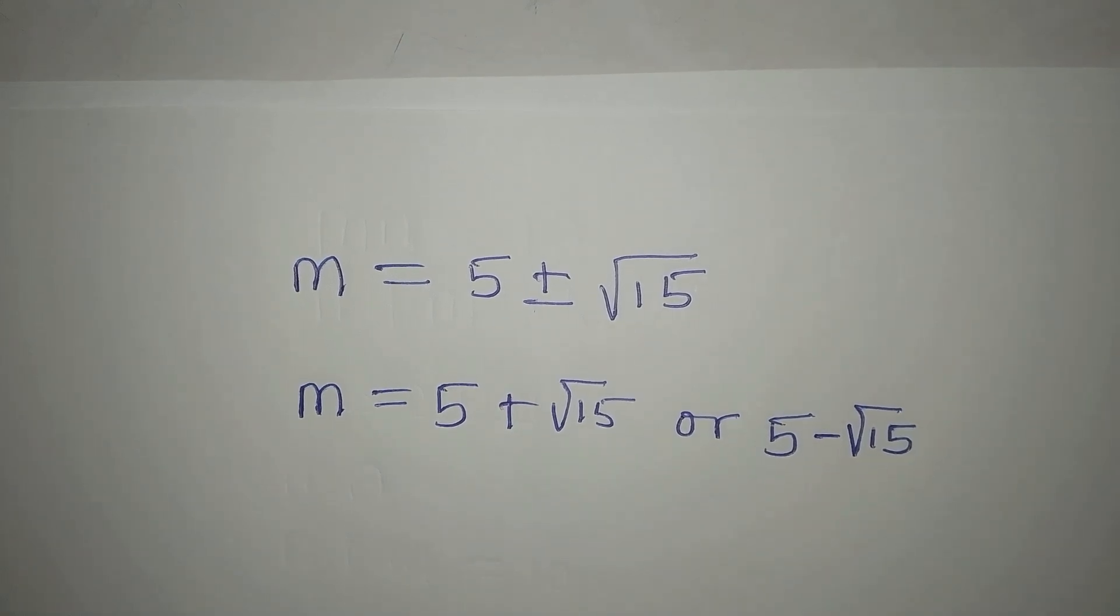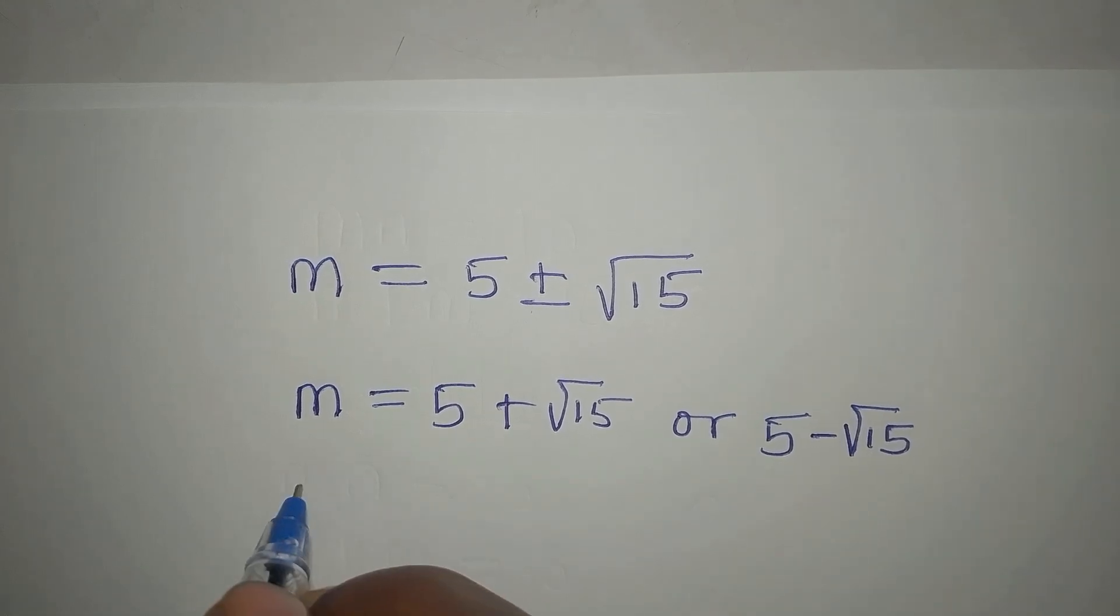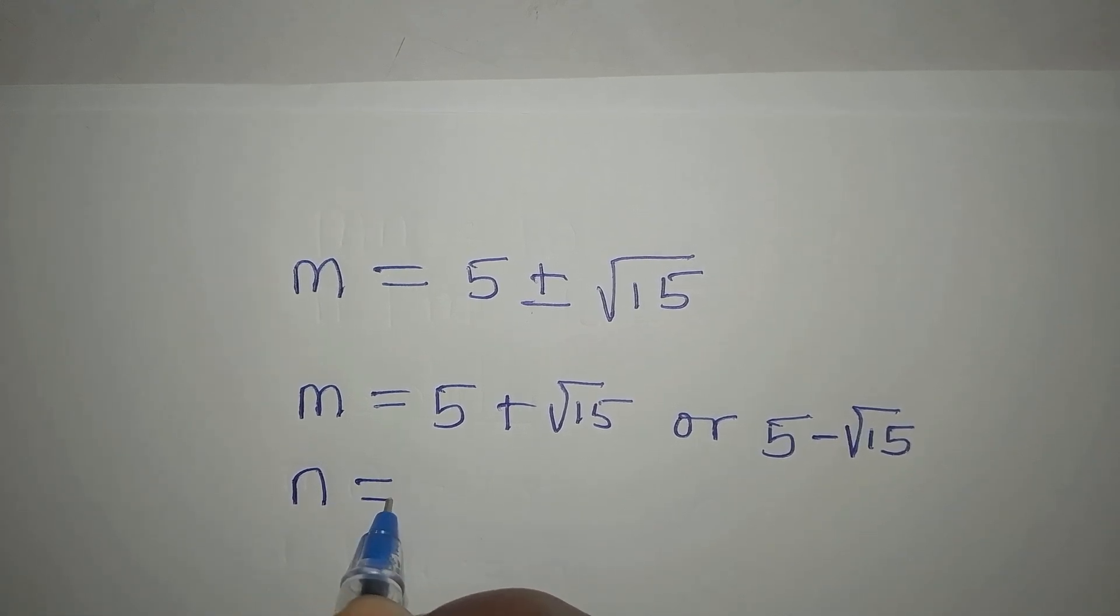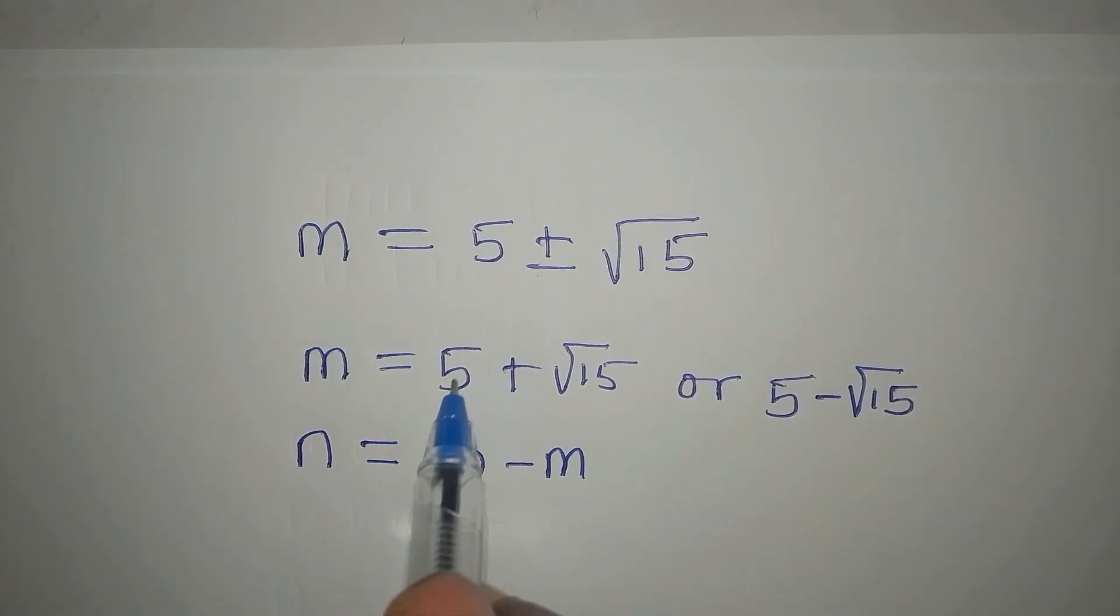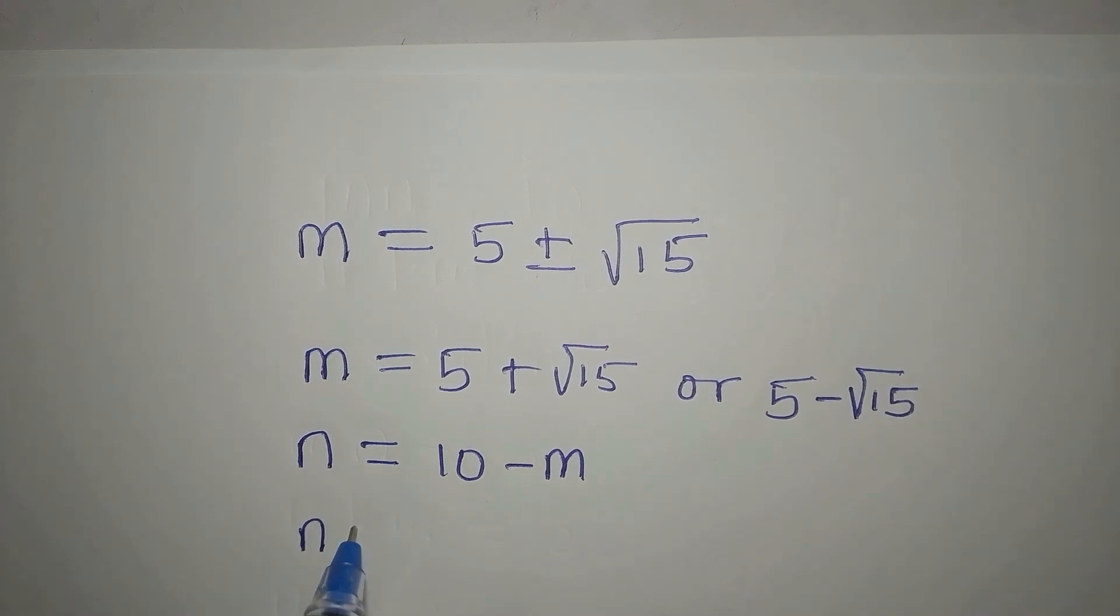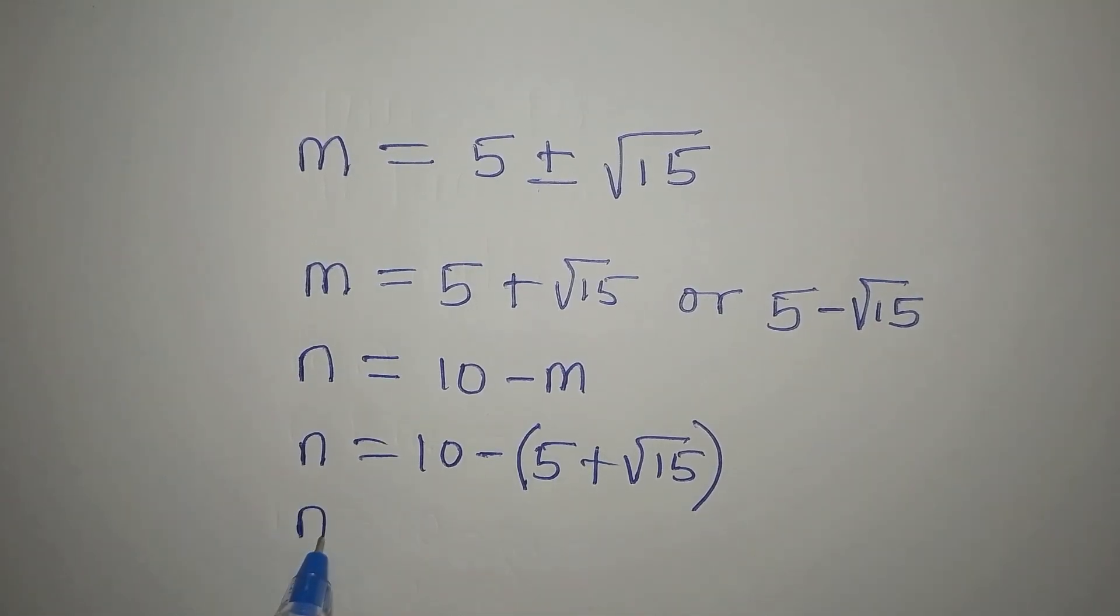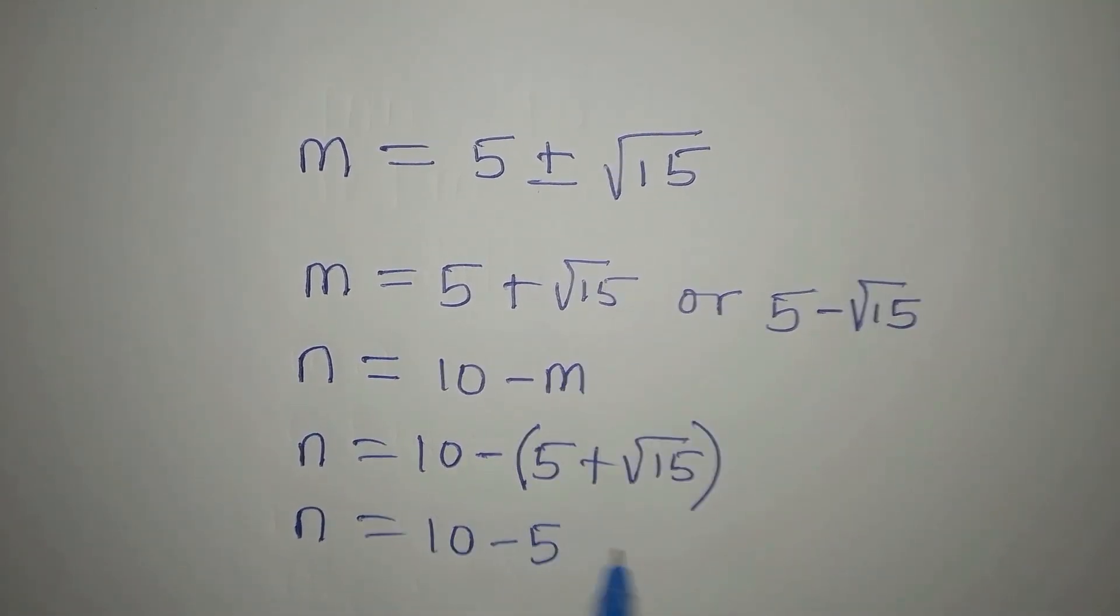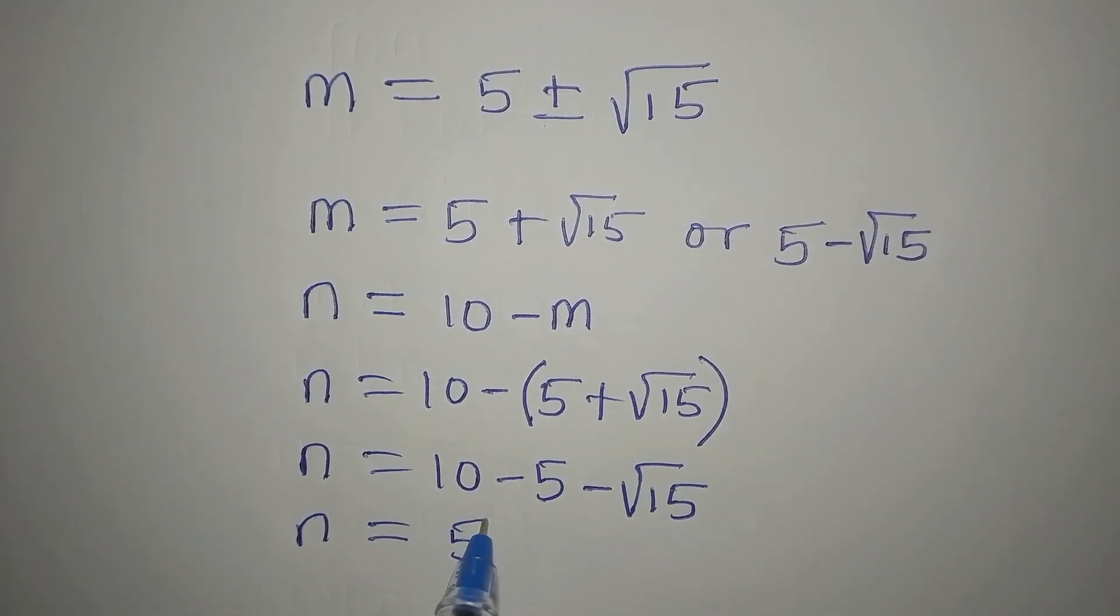Now we were not looking for m alone. We had n to look for. And from equation 3, n is the subject. 10 minus m. So now that we know the value of m, put it here. So n will now be 10 minus m itself is 5 plus square root of 15. I've picked the first value of m. So n is now 10 minus 5 minus root of 15. So that n will now be 5 minus root of 15.